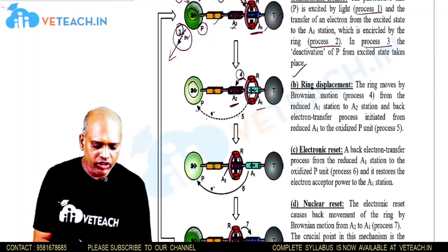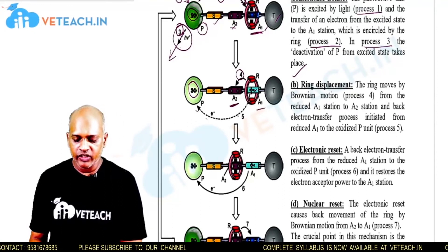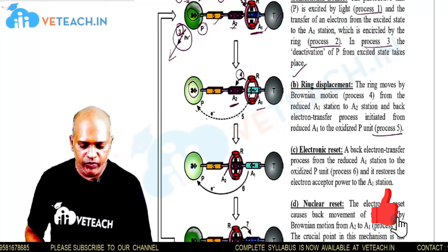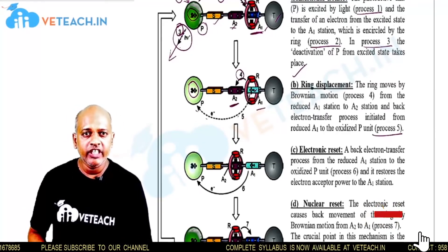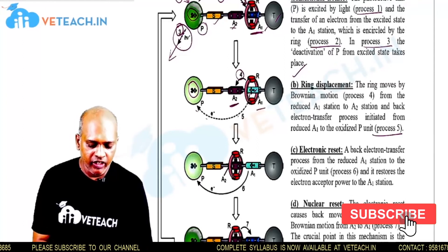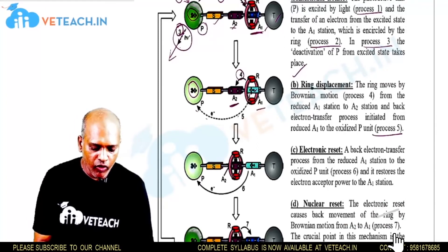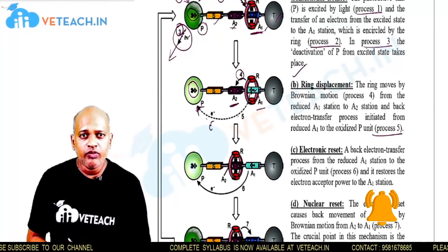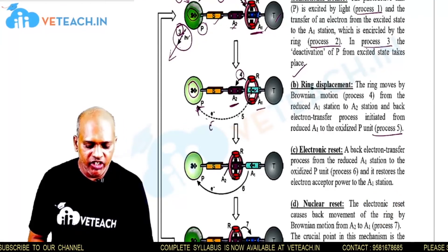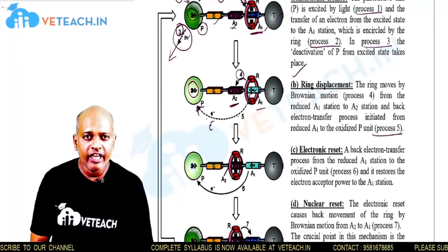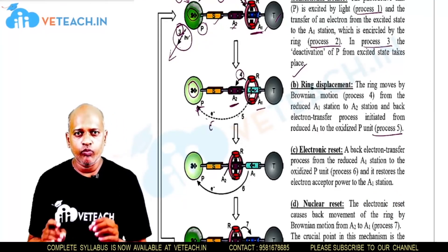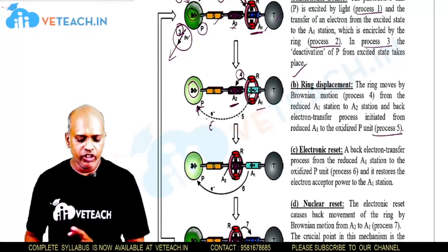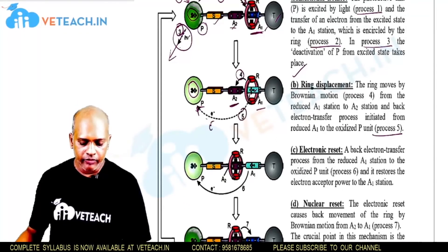Process 5 initiates the electron transfer from A1 back to P. This transfer process is just initiated and is indicated by a dotted line in the diagram.